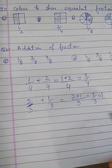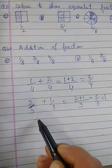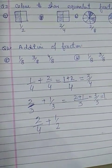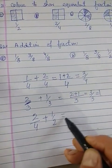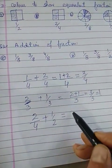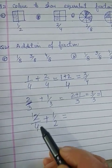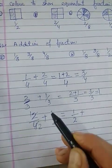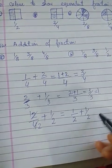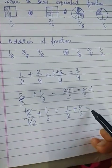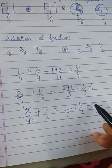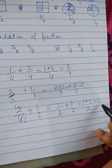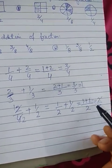Suppose we have 2 by 4 plus 1 by 2. First, we can simplify 2 by 4 - dividing by 2 gives us 1 by 2. Since the denominators are the same, we add the numerators: 1 plus 1 equals 2, divided by 2, which equals 1.